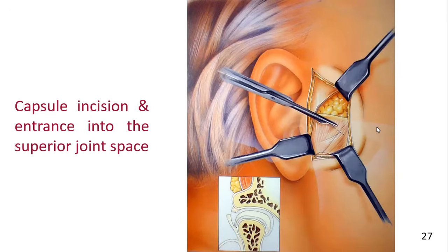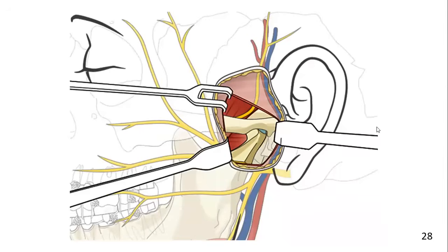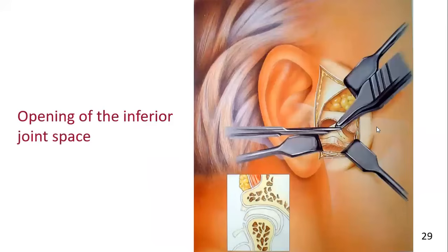Lateral retraction of the capsule allows entrance into the superior joint space. Dissection can be carried inferiorly in a subperiosteal plane to reach the neck of the mandibular condyle. The inferior joint space is opened by making an incision in the disc along its lateral attachment to the condyle within the lateral recess of the upper joint space. The incision may be extended posteriorly into the attachment tissues, and the inferior joint space is then entered. Here you can see the incision through the lateral attachment of the temporomandibular joint disc entering the inferior joint space.